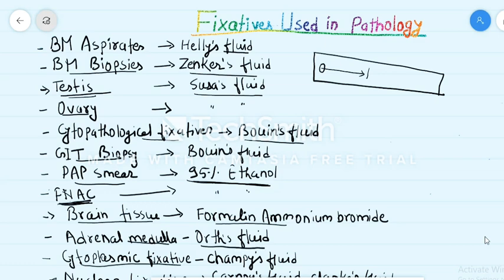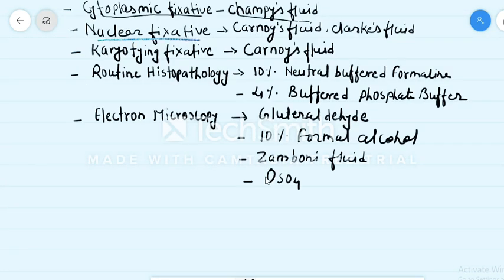The cytoplasmic fixative is Carnoy's fluid. The nuclear fixative is Carnoy's fluid and Clark's fluid. For karyotyping, the fixative is also Carnoy's fluid.